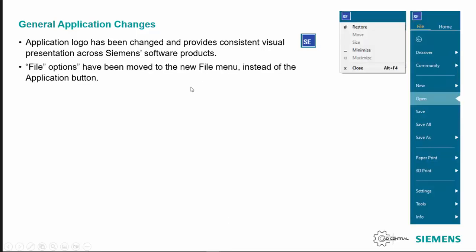Linked to that, in previous versions you used to use the application button to get to the main file options, and they've now been added into a file menu at the top of the screen.